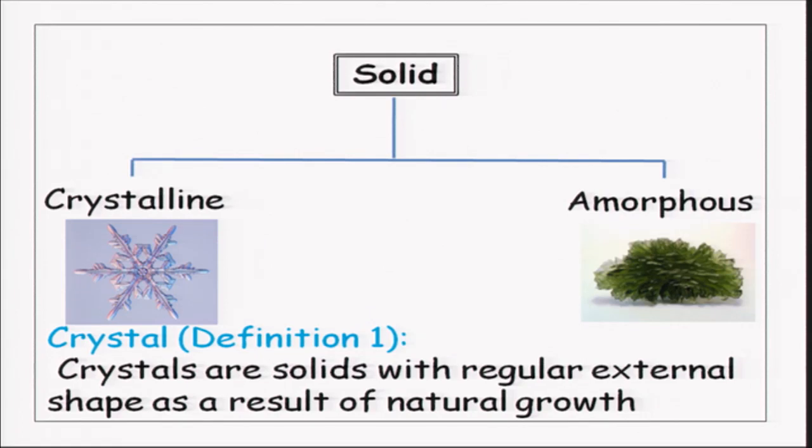Based on this, a classification scheme was developed and materials were classified as crystalline or amorphous. Those materials which have regular external shape as a result of their natural growth, and you do not have to externally design or shape them, they were called crystalline. And other kinds of material which do not have this natural shape were termed as amorphous. So all solids were classified as either crystalline or amorphous, and the definition of a crystal was based on the regular external shape.